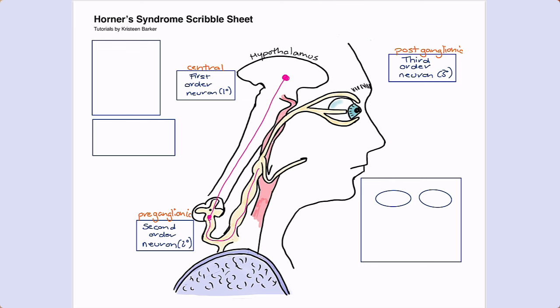The second-order neuron leaves the spinal cord at T1 and travels up the neck to a little autonomic nervous system hub called the superior cervical ganglion — a place where sympathetic fibers pass on the message to other sympathetic fibers going forth into the face. And notably, this ganglion is right next to the carotid artery.